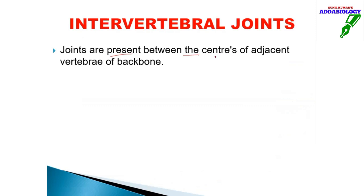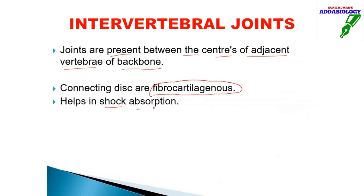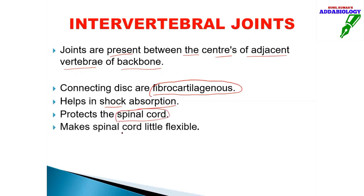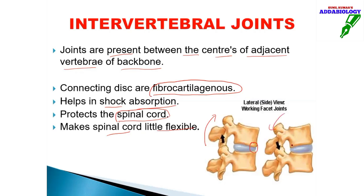The intervertebral joint connects the centers of adjacent vertebrae of the backbone. The connecting disc is fibrocartilaginous, which helps in shock absorption — if somebody hits you on the back, the shock is absorbed by this cartilage. It also protects the spinal cord and makes it slightly flexible, allowing a little forward and backward movement.